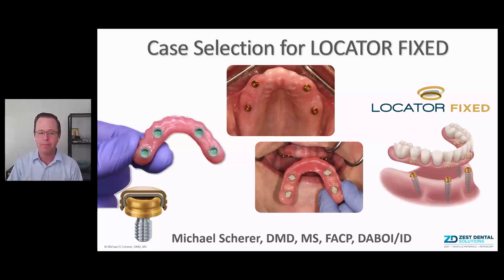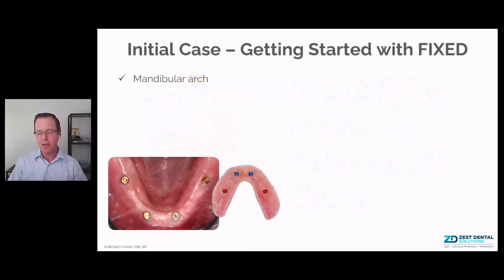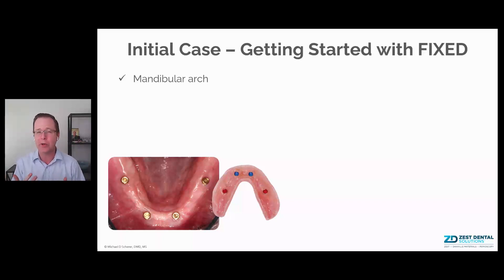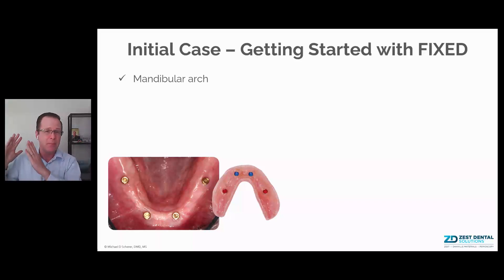Let's go ahead and dive right in. We want to identify those initial or great cases to begin with, as well as your middle of the road and advanced cases. Getting started, if you were to look at what would be considered the ideal first case — meaning a patient in your clinical practice where you've heard about Locator Fixed and want to know what a great first case looks like — first and foremost, the mandibular arch. It's really pretty straightforward to begin anything on the mandibular arch, whether it's Locator implant surgery all the way up to doing the Locator Fixed prosthesis.